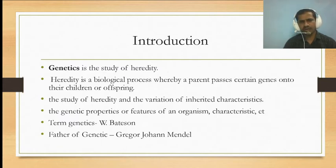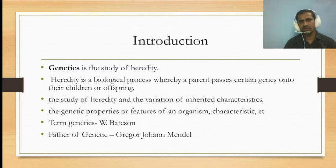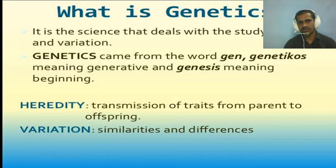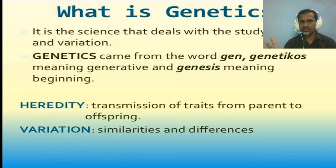The genetic properties or features of organisms are called characteristics. The term genetics was first used by W. Bateson. The father of genetics is Gregor Johann Mendel. The word genetics is originally derived from the Greek word 'genetikos', meaning generative, and 'genesis', meaning beginning.